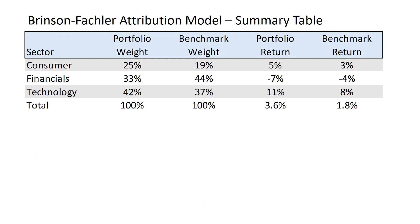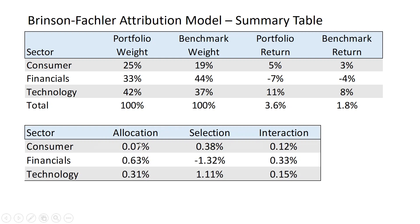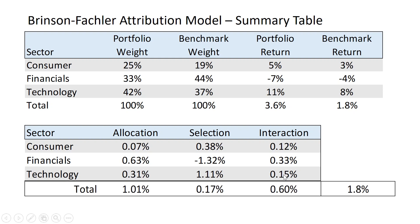Let's summarize. Our allocation effect: 7 basis points from consumers, 63 from financials, 31 from technology. The selection effect had two positives and one negative. The interaction effect is also here. If I sum all that up, it sums to 180 basis points — 178 to be precise. So we were better allocators than we were stock selectors, and we had some good interaction effect as well.